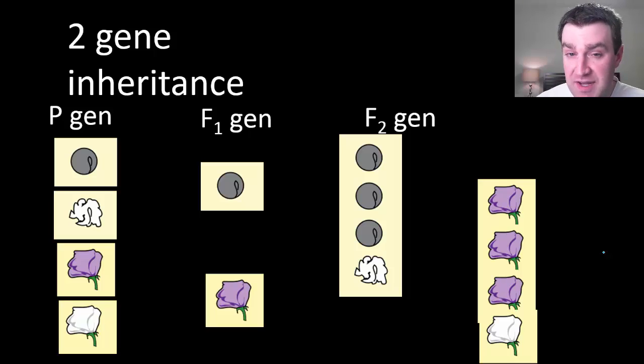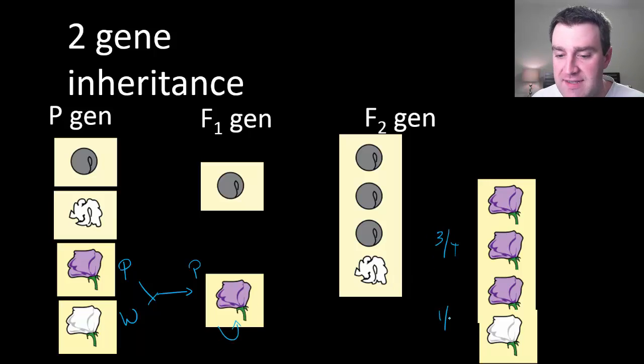We can continue Mendel's studies by thinking about the different flower colors he studied. We saw that when you cross purple and white pure breeds, all the offspring came out purple. But then when you self-pollinated these plants, they came out three-fourths purple, one-fourth white, and that mathematical result was really important to him.